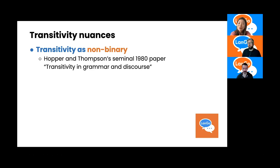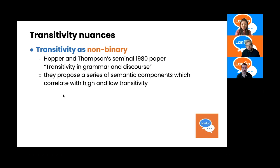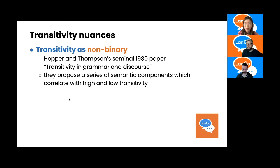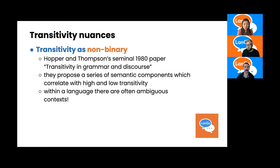Hopper and Thompson's seminal paper was called 'Transitivity in Grammar and Discourse,' and they and many others have acknowledged transitivity gray areas. Hopper and Thompson proposed a series of semantic components which they correlate with high and low transitivity. Instead of transitivity being simply intransitive or transitive, there are things that are more transitive and things that are less transitive. Within a single language there are often ambiguous contexts, and cross-linguistically there are even bigger ones. One I've noticed quite a bit of variation in is reflexive action.